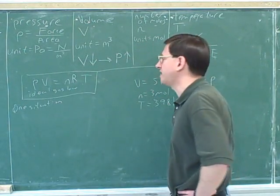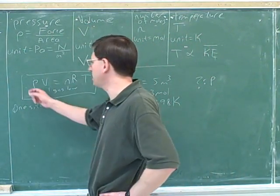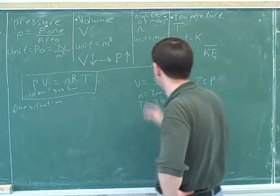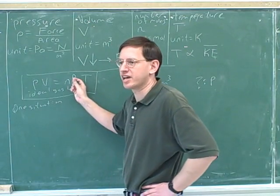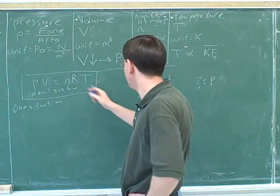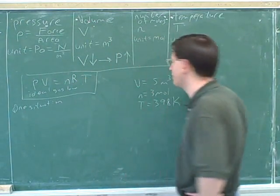You would plug in 5 for V, 3 for N. You would look up R in your inside front cover and you would put that in for T. And then you'd do a little algebra and figure out P. Now, this is what I would call a one situation problem because we just described one situation here.